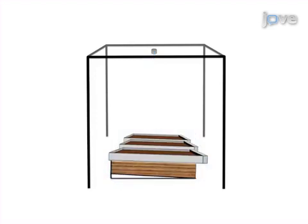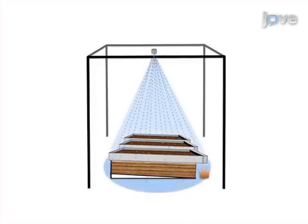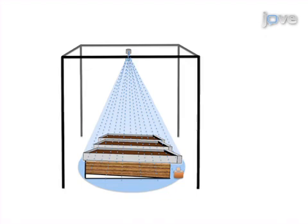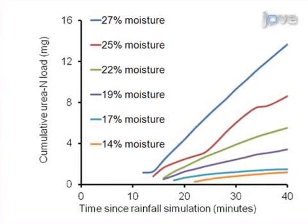Next, properly packed soil boxes are positioned in the target area on a platform adjusted to a uniform slope. The final step is to conduct a rainfall simulation and collect soil runoff for analysis. Ultimately, rainfall simulation is used to study the effects of soil properties, soil amendments, antecedent soil moisture, topography, and rainfall intensity on soil runoff under standard conditions that approximate natural rainfall.